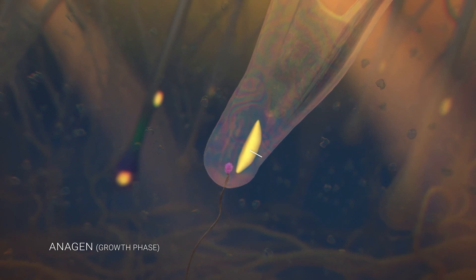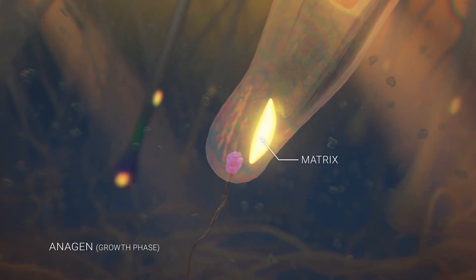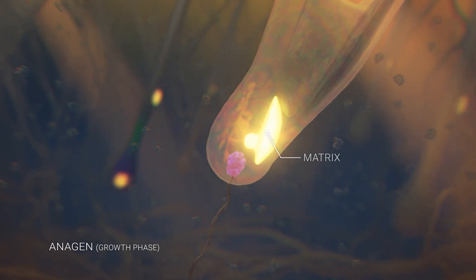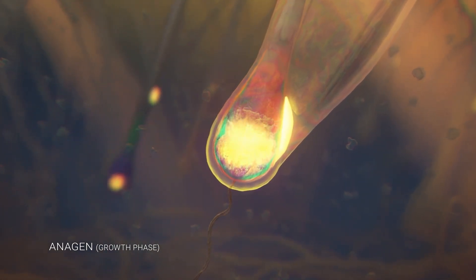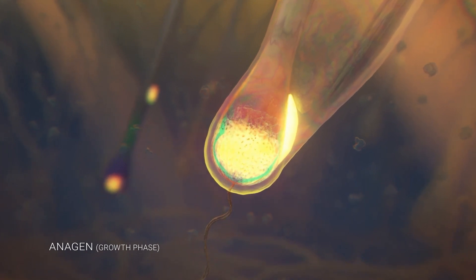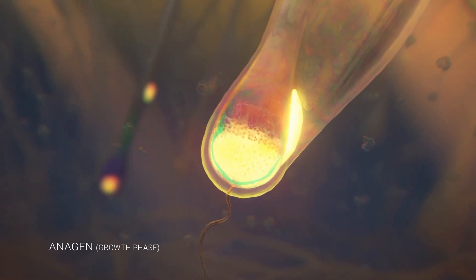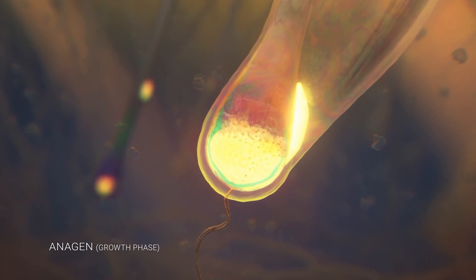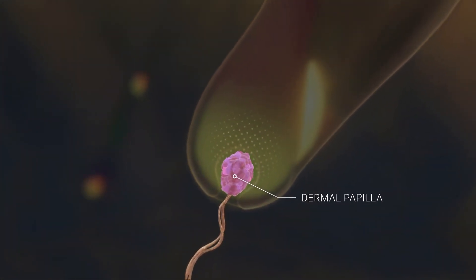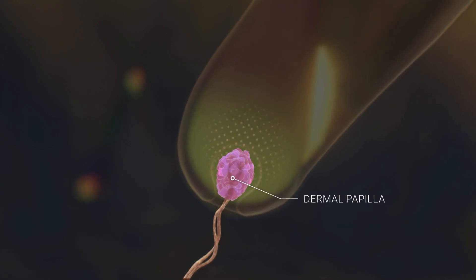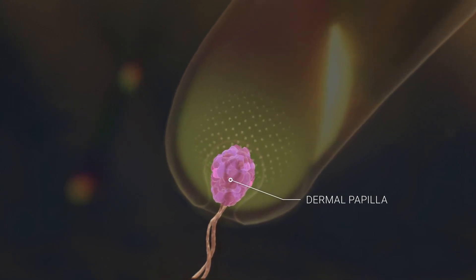During anagen, a special pool of stem cells known as the matrix multiplies and forms the base of the hair root bulb. As the new matrix cells mature, they surround and enclose the dermal papilla and migrate upwards to form the distinct layers that make up the hair and its supporting tissue. At the core of all this growth is the dermal papilla, which feeds and provides growth signals to the stem cells in the matrix.